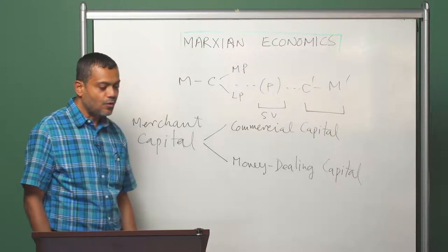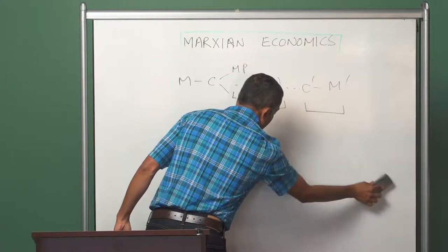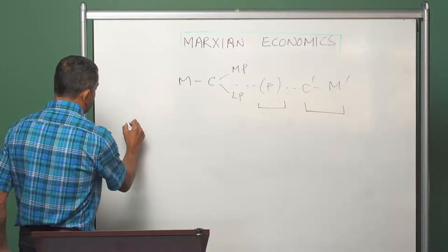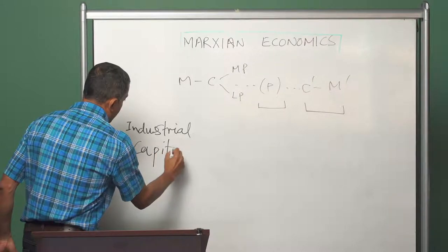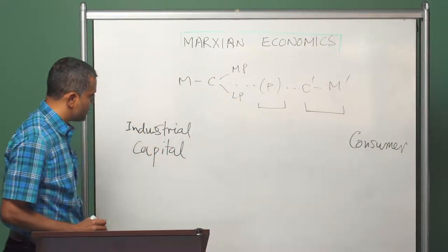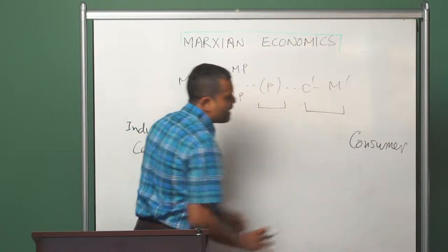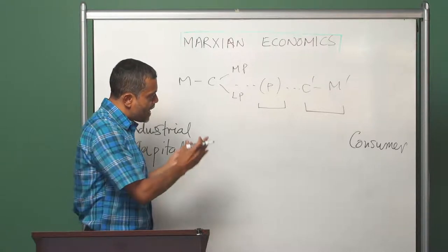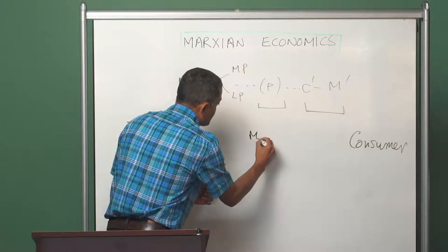How does commercial profit arise? What is the mechanism through which that happens? We can think of a two-part sale of the commodity. On the one hand is industrial capital which has produced the commodity, and on the other side is the consumer which will consume it. So far we have assumed that the capitalist who produces it directly sells to the consumer, but that is not what happens in advanced capitalist countries.